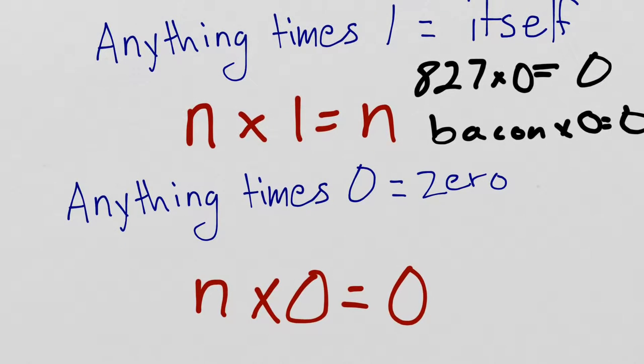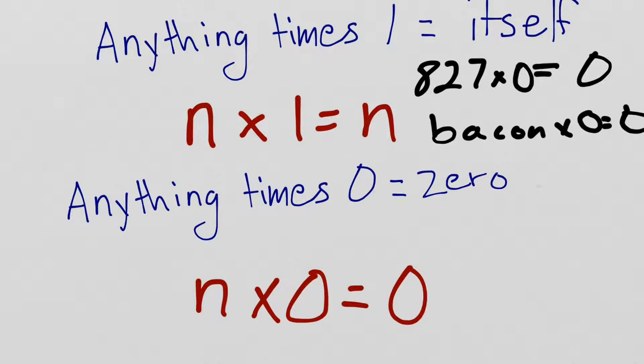The same thing is going to be true with division. Anything divided by one equals what you started with because you're putting it all in one group. And, zero divided into any number of groups is still zero. There's the one special case, which is this, which is when you divide a number by itself.